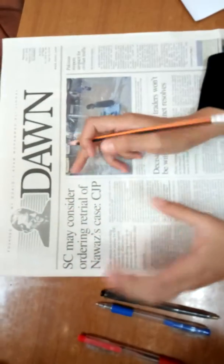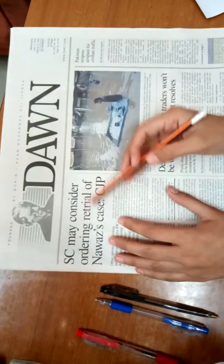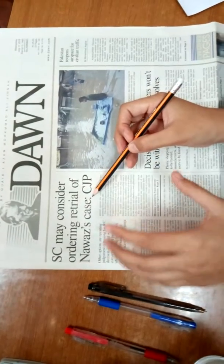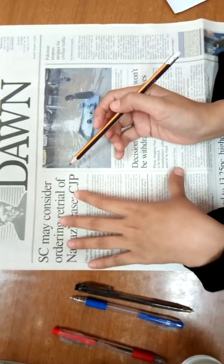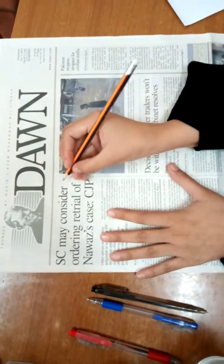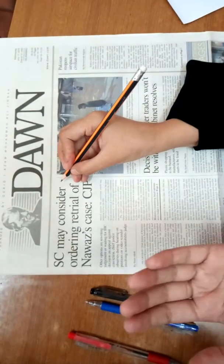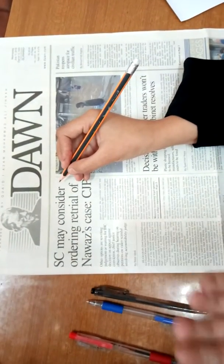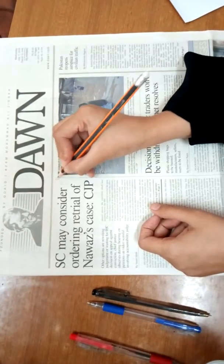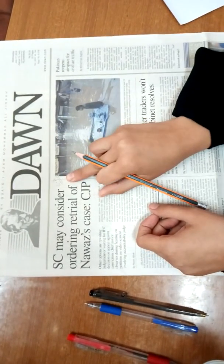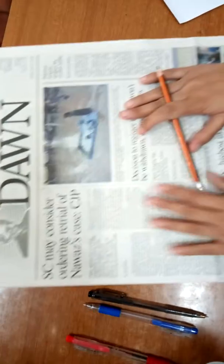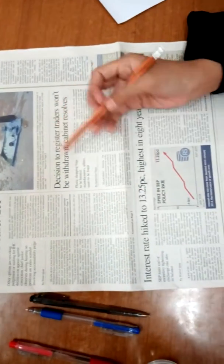For example, this headline: 'Supreme Court may consider ordering retrieval of Nawaz case.' You can see this title and decide which subject it is suited to. If you think it is related to your current affairs, then you mark it as CA — CA stands for current affairs.